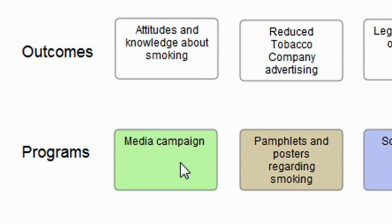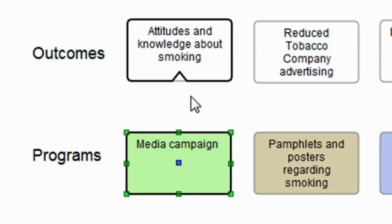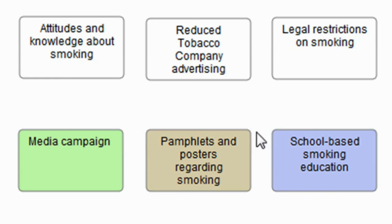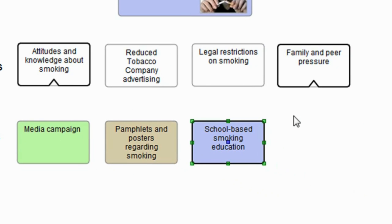When I click on one of those programs, you can see a DoView link icon appear — this is another way within DoView to show a link, not relying just on lines and arrows. The DoView link icon shows that the media campaign is directed at the step 'attitudes and knowledge about smoking.' If I click on the pamphlets, that program is also directed at changing knowledge and attitudes. Clicking on school-based smoking education shows it's directed at changing knowledge and attitudes but also at family and peer pressure regarding smoking.